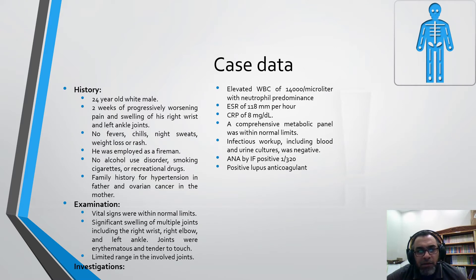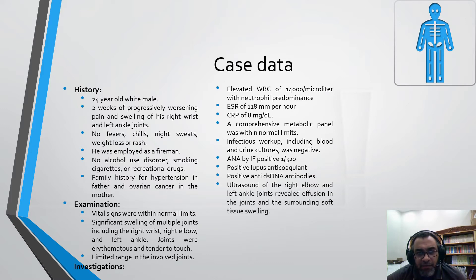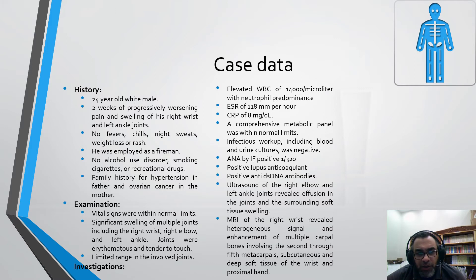ANA by immunofluorescence was positive with a titer of 1:32. Positive lupus anticoagulant and positive anti-double-stranded DNA antibodies were also found. Ultrasound of the right elbow and left ankle joint revealed effusion in the joints and surrounding soft tissue swelling.